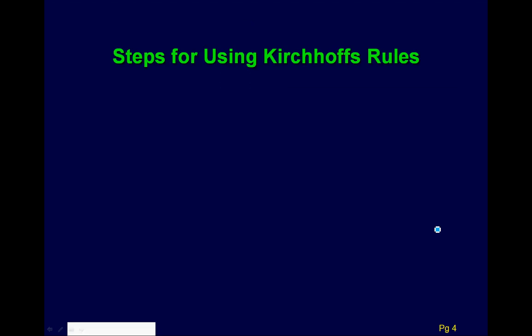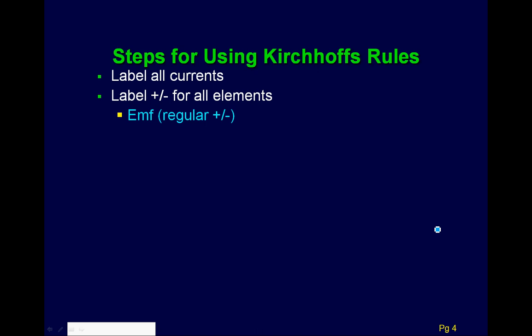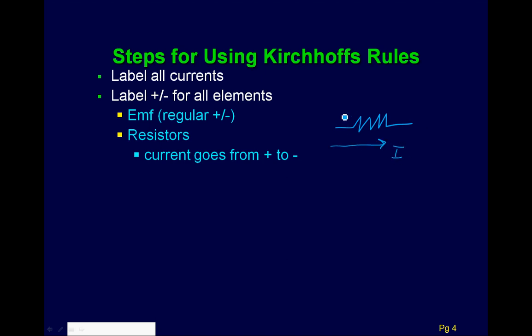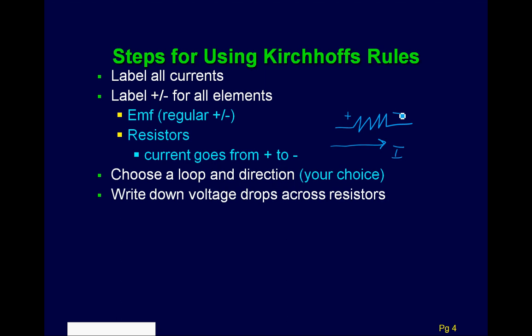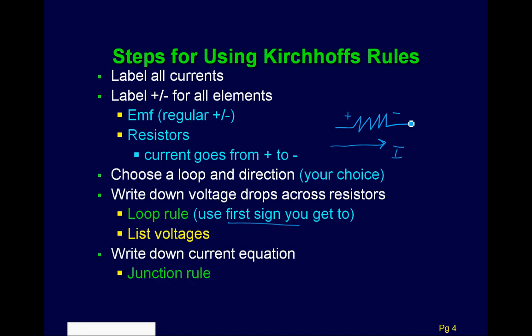We use a set of procedures similar to what Knight does. First, label all your currents — that can be tricky. Then label positive and negative for all elements. For a battery EMF, it's the regular positive or negative. For resistors, the current travels from positive to negative, so if current goes this way through the resistor, it's positive then negative. You choose a loop and direction, go around, and use the first sign you come to for each element.